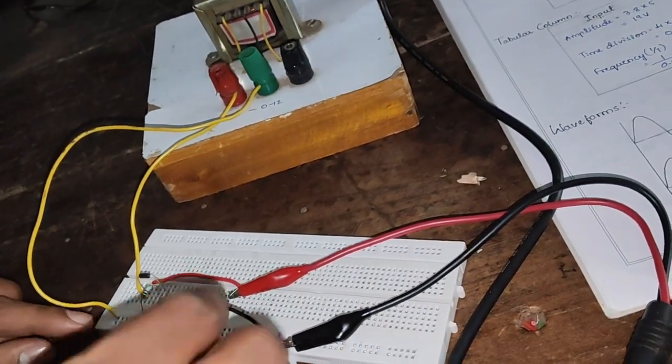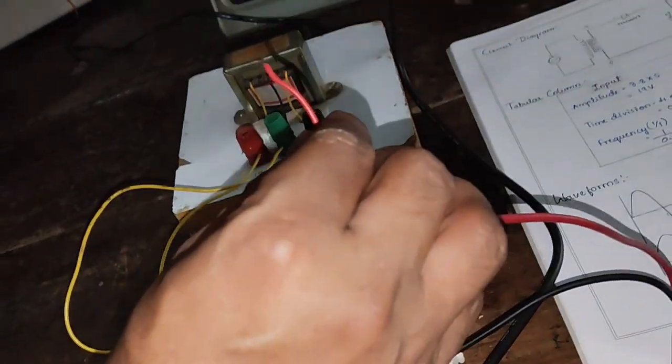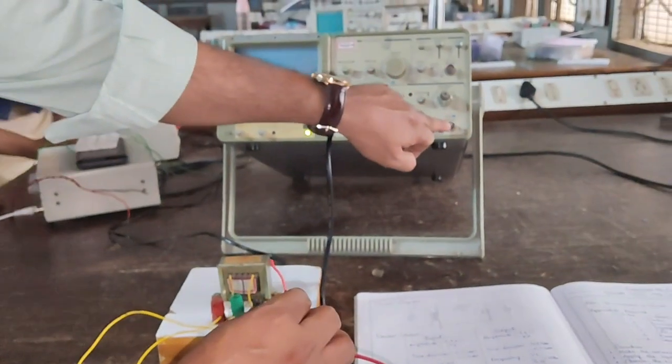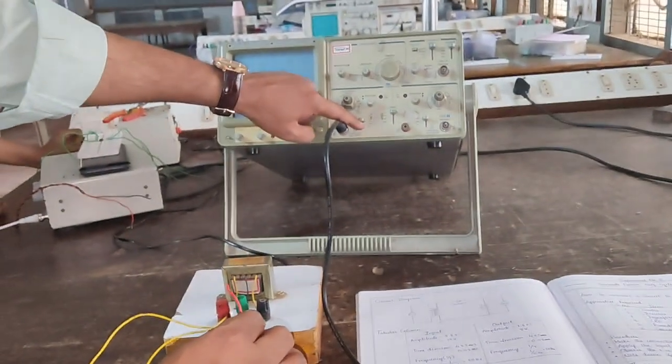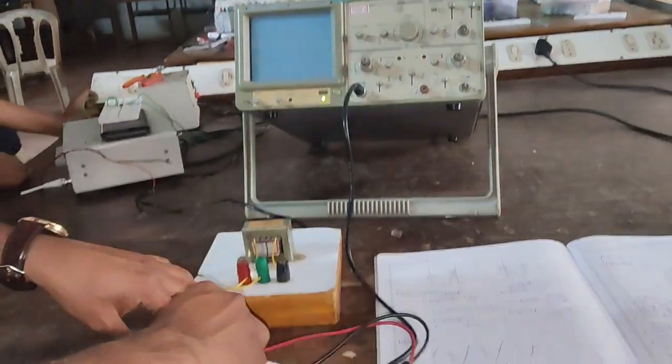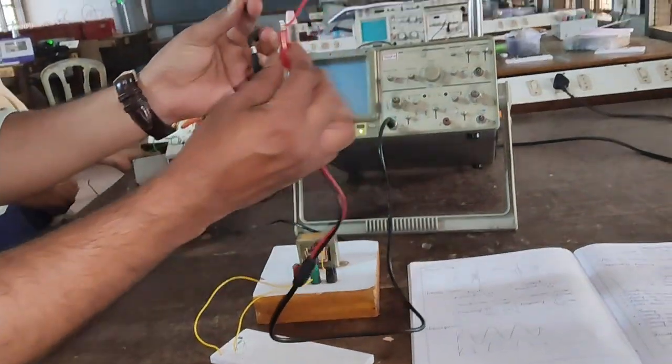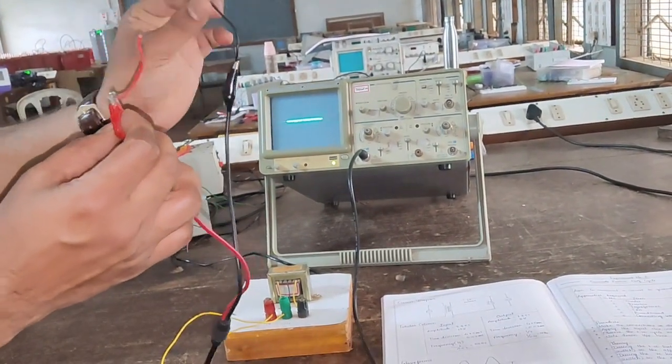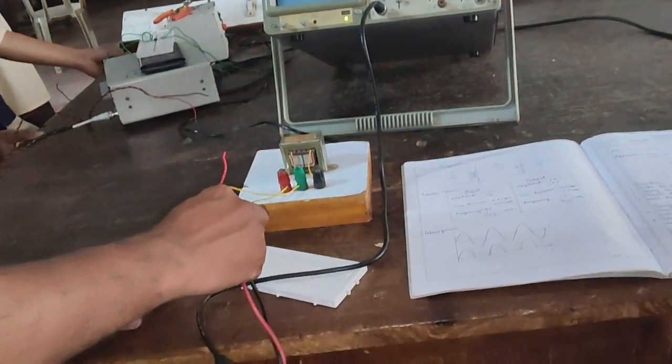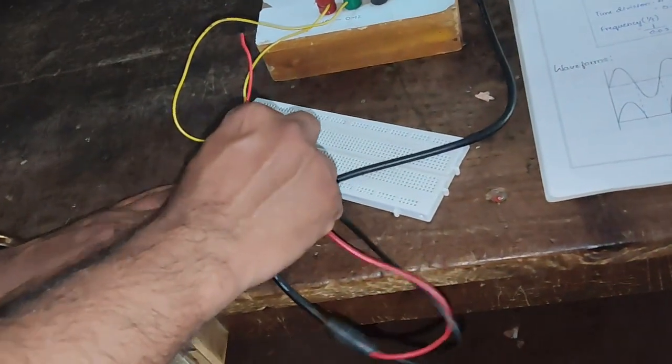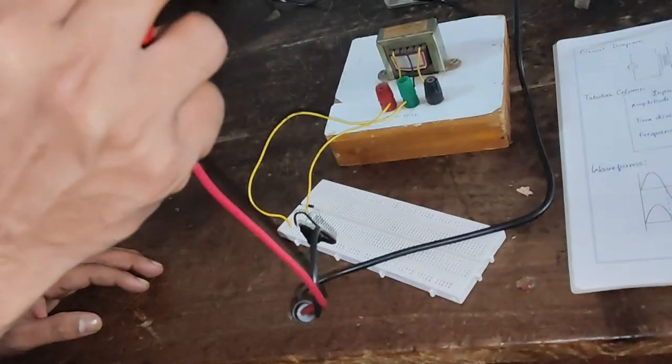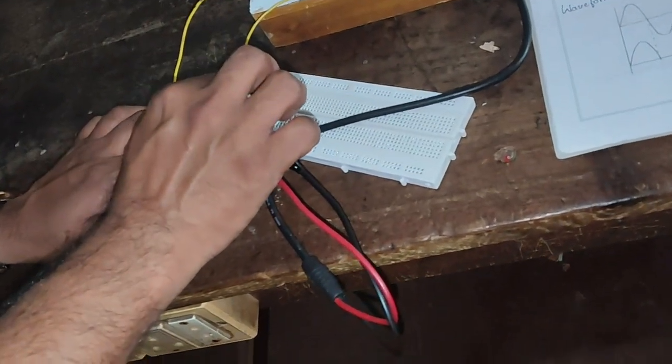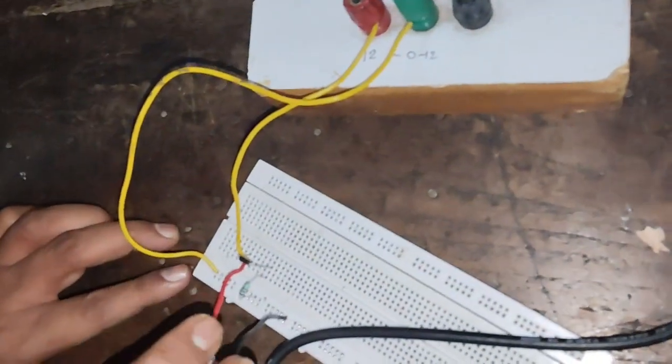Let's observe the input. This is a CRO with channel 1 and channel 2. Channel 1 here we have to set as AC. The connector polarity has one positive and one negative. We should connect the negative always to the ground. I will connect here to the ground. Let's check the input with the help of this positive connector. I will connect this input at the output of the transformer.